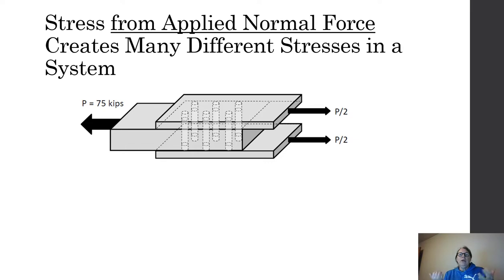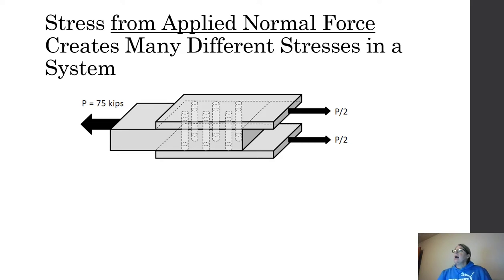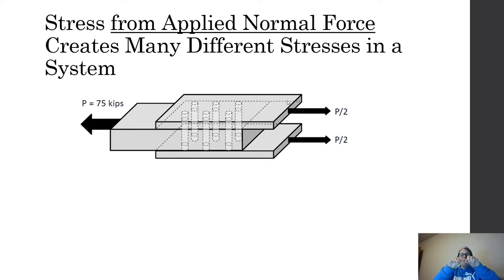When we apply that axial load and cut the inside of that plate, if I cut to the left side and find the internal normal force associated with 75 kips, I find the internal equal and opposite normal force is 75 kips. If P is 75 then P over 2 is 37.5. If I cut the plates on the right — a 1-inch by 10-inch plate — I now have a cross-sectional area and can calculate the normal force causing tension or compression.